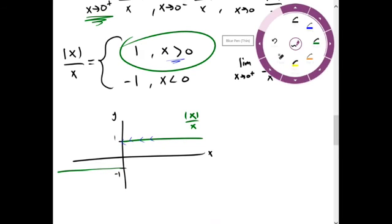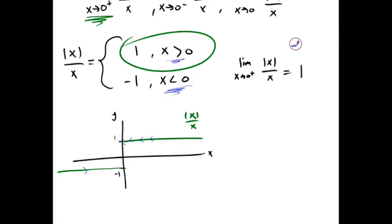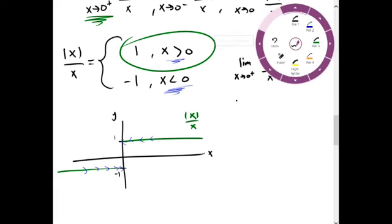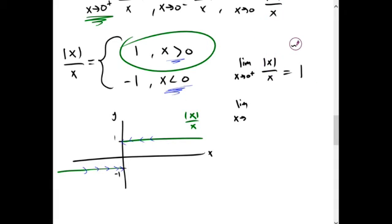But if we're coming from the left, where x is less than 0, we see we'll approach negative 1. So, the limit as x approaches 0 from the left of absolute value of x over x is negative 1.